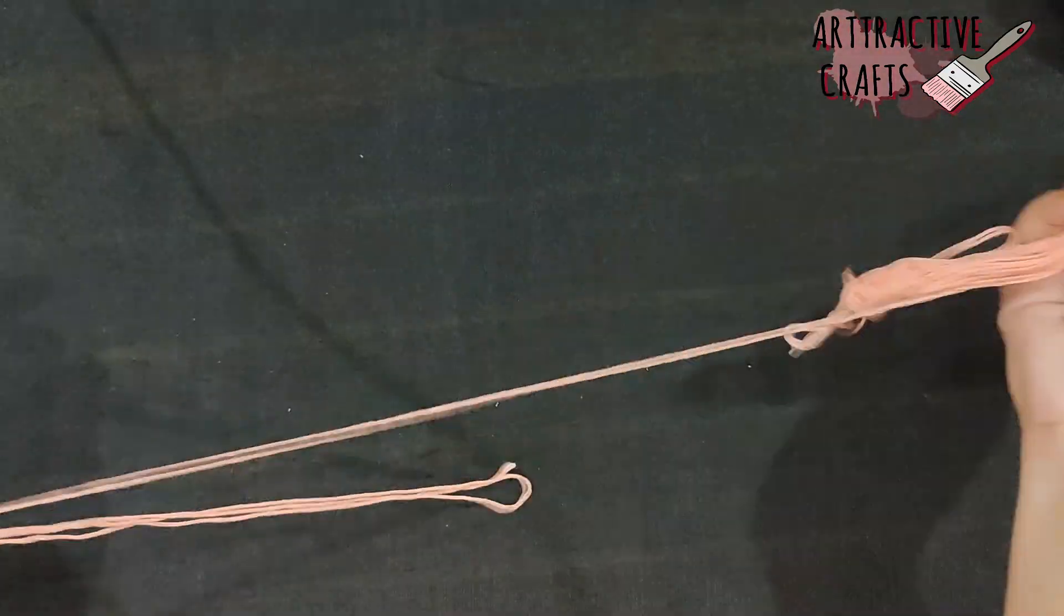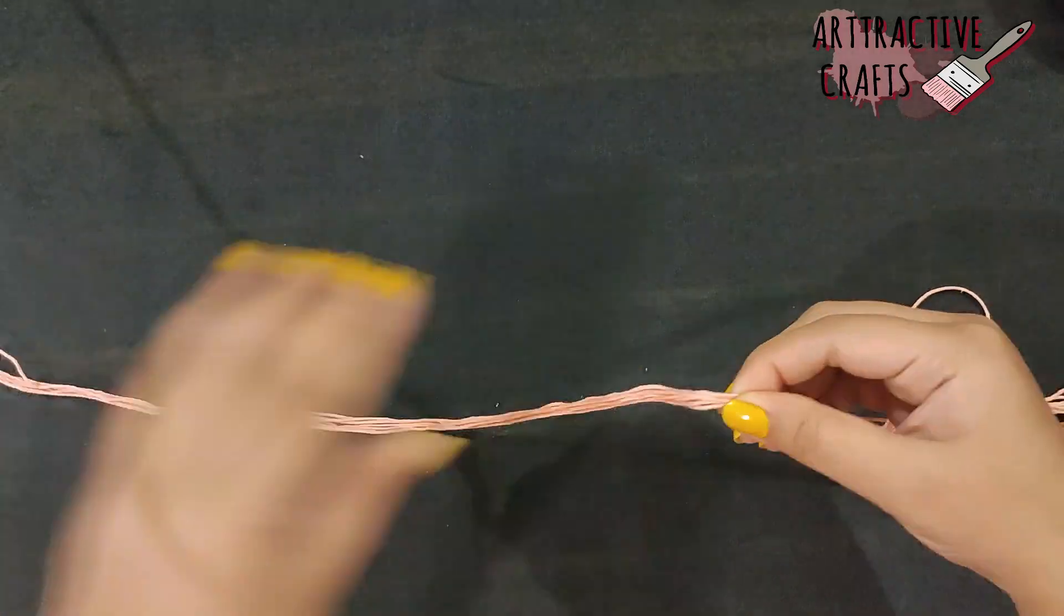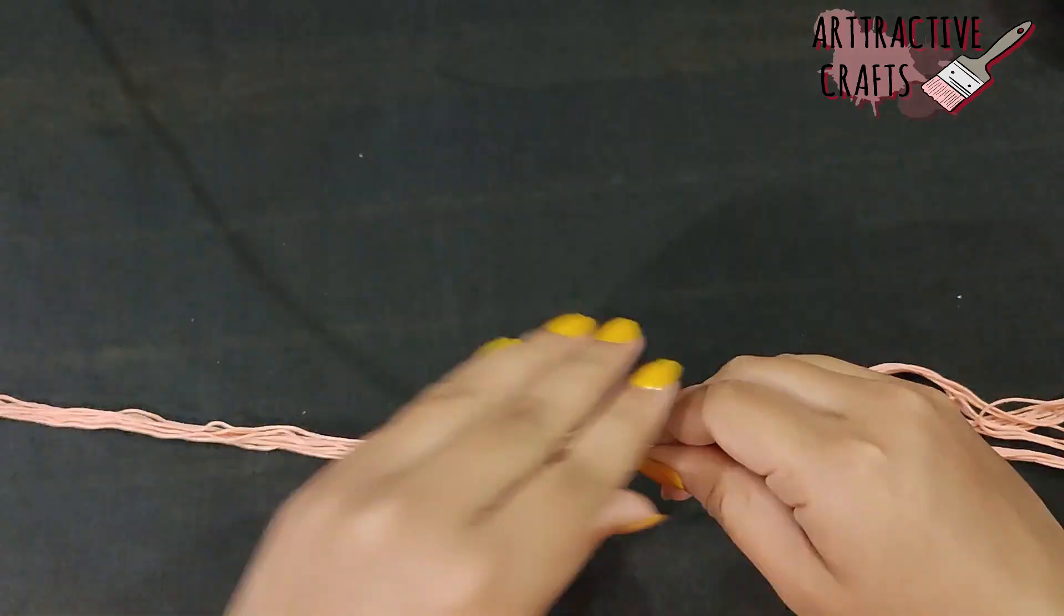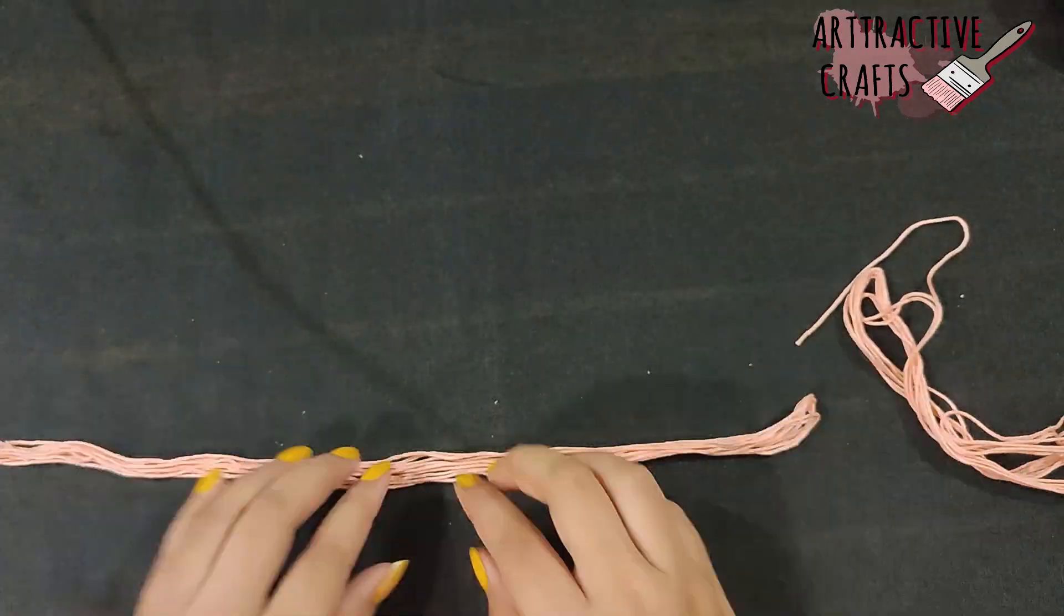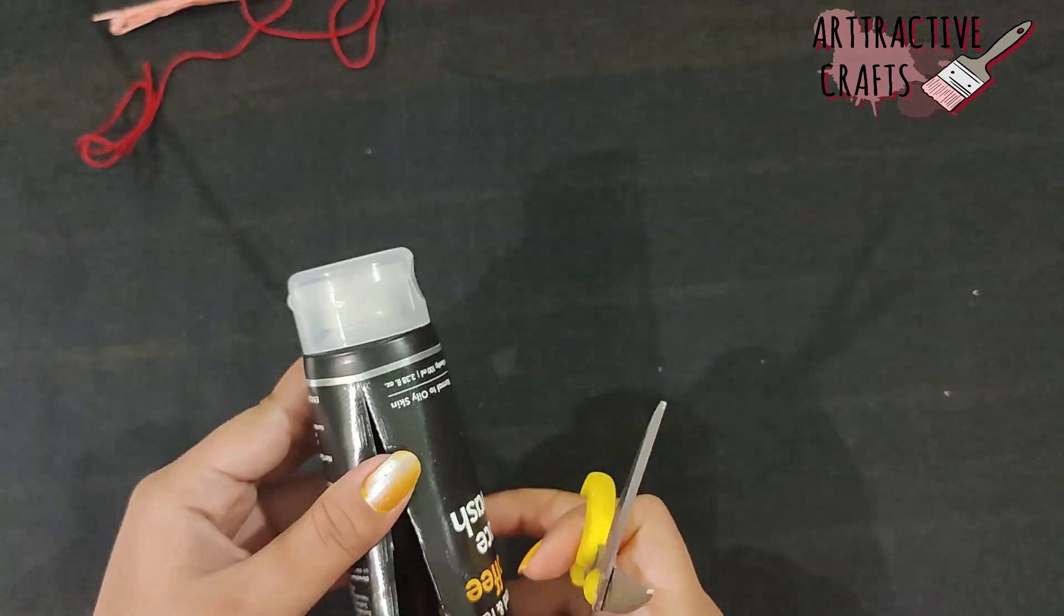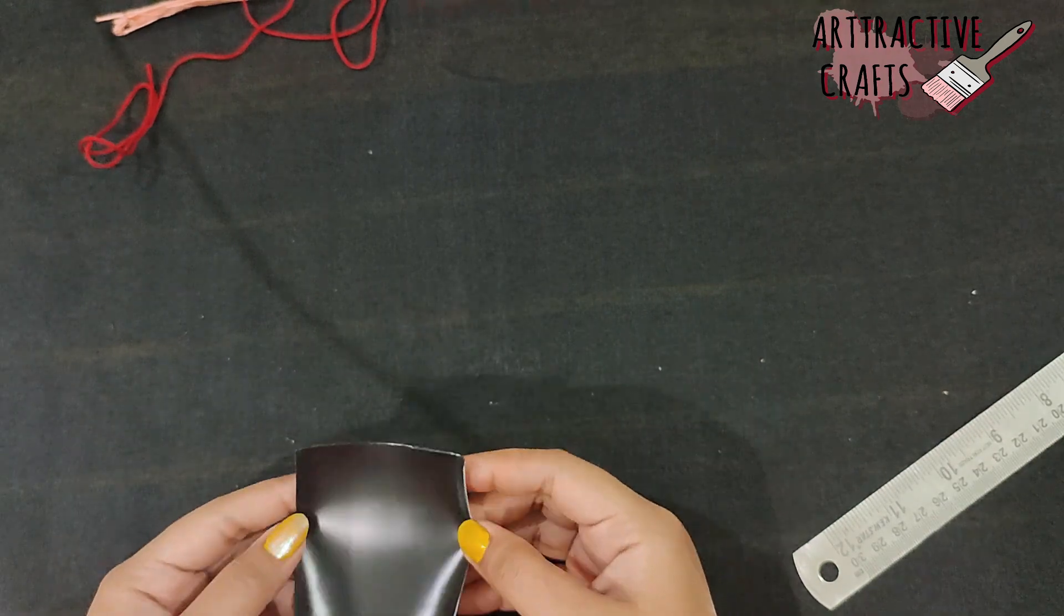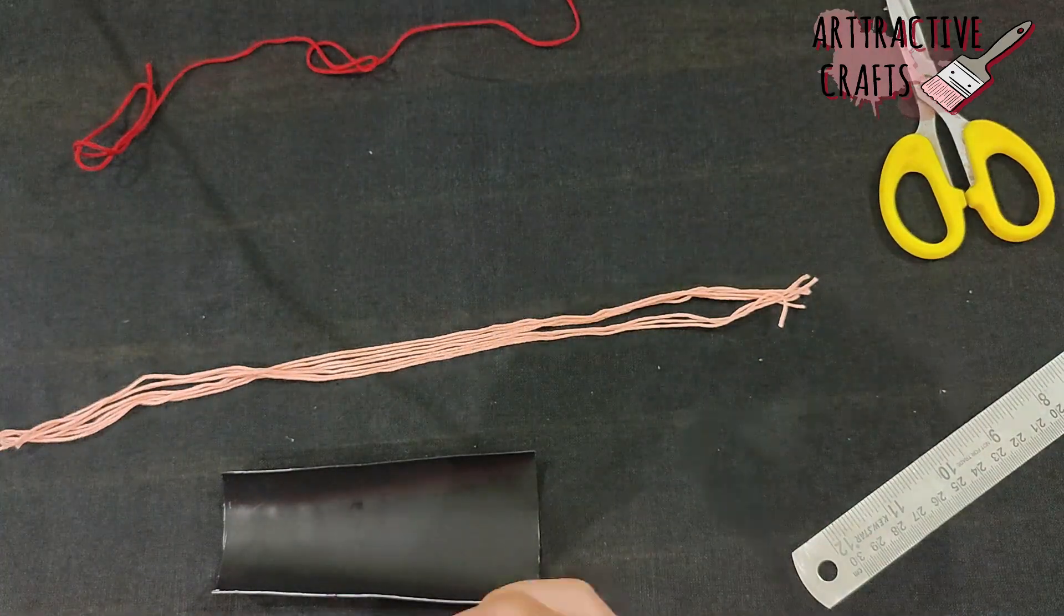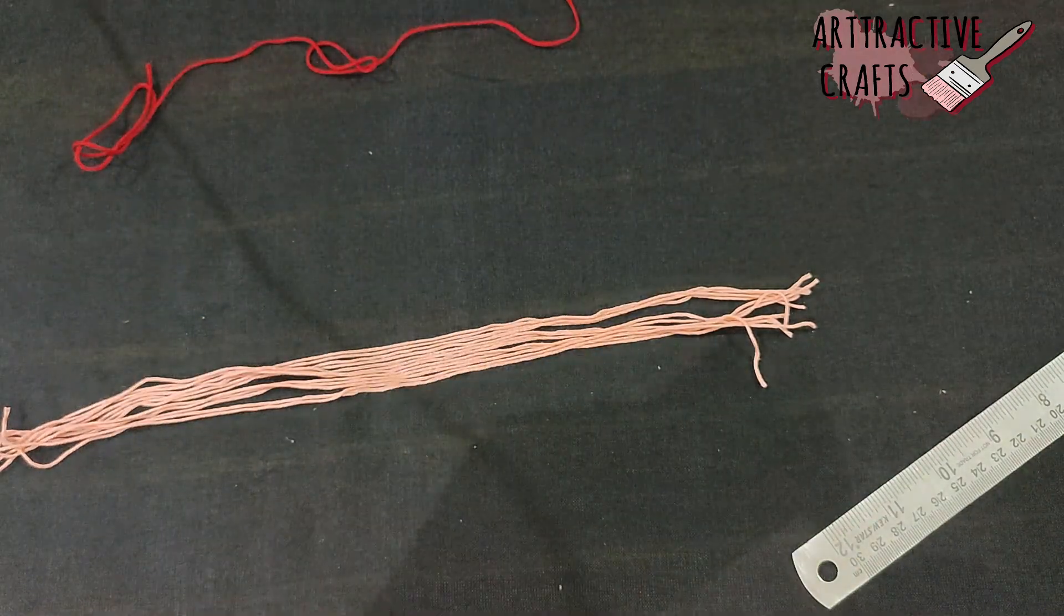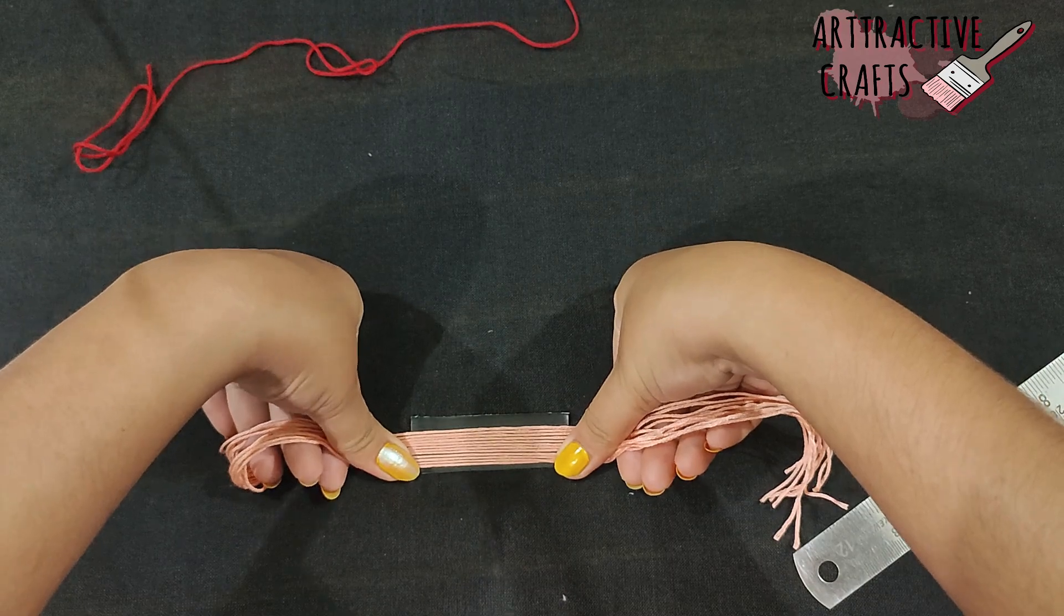The number of rows indicate the number of strings. Take a used toothpaste or face tube and cut it as shown. Measure the thickness of the strings placed one below another and take an exact cutout. Place all the strings on the plastic cutout to check.